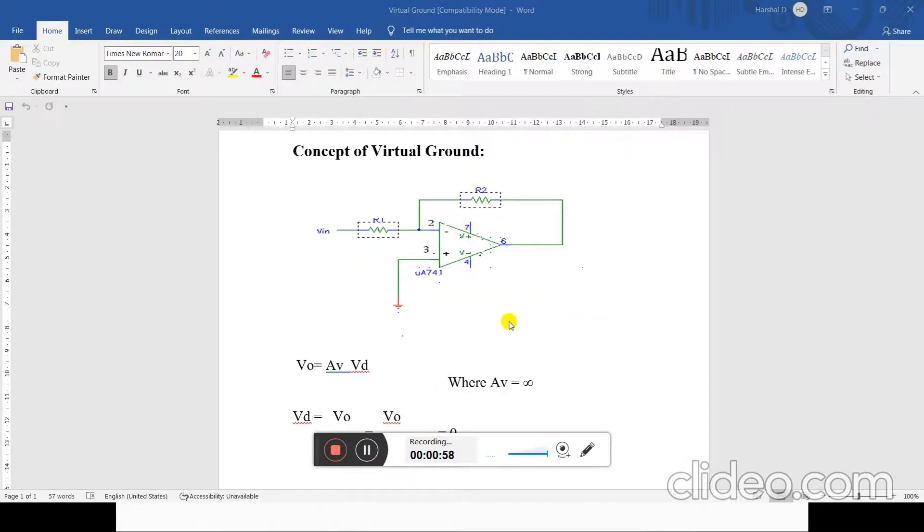As shown in this diagram, the output voltage depends upon the differential voltage, that means the difference between v2 and v1, and the gain of the operational amplifier.